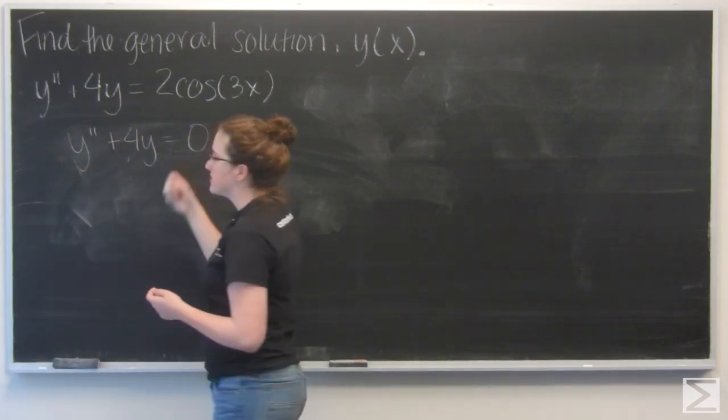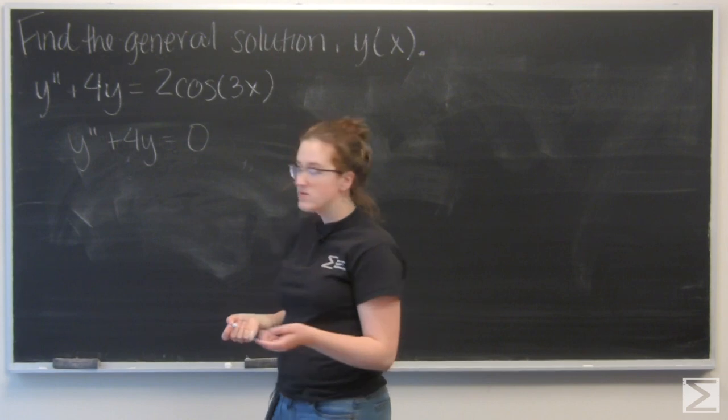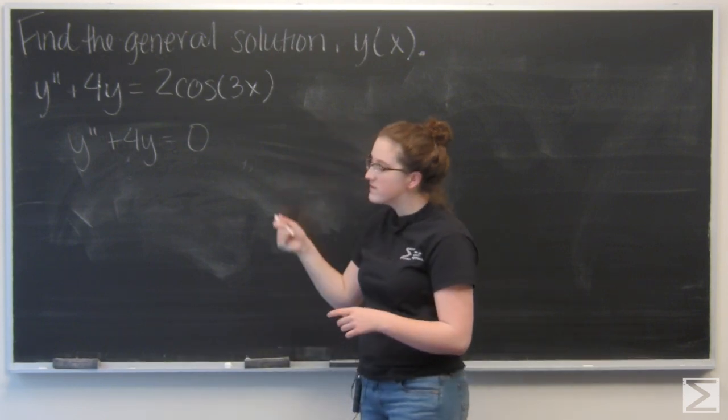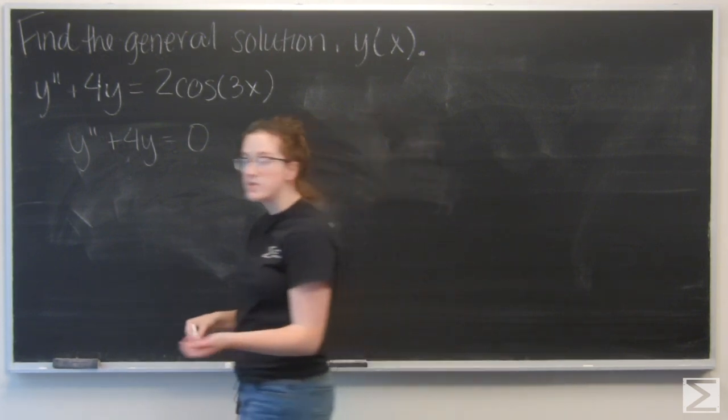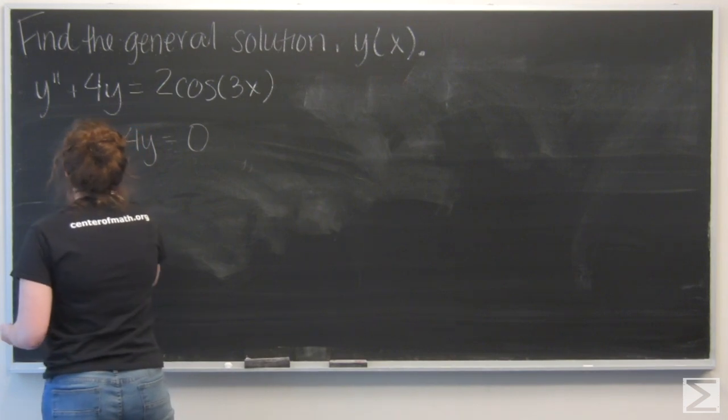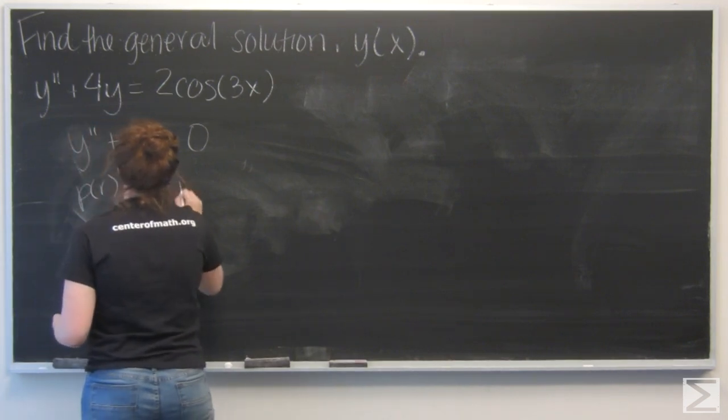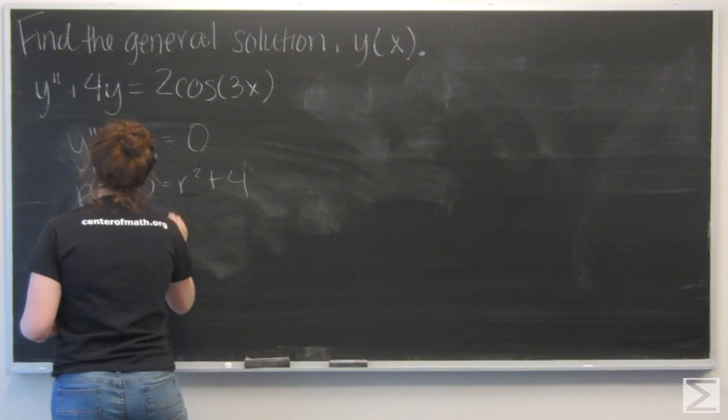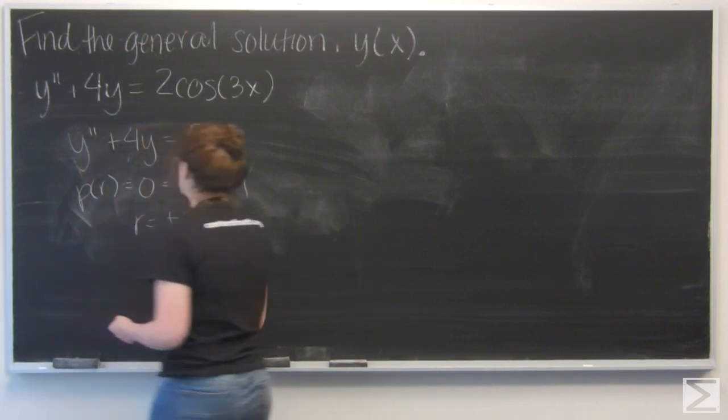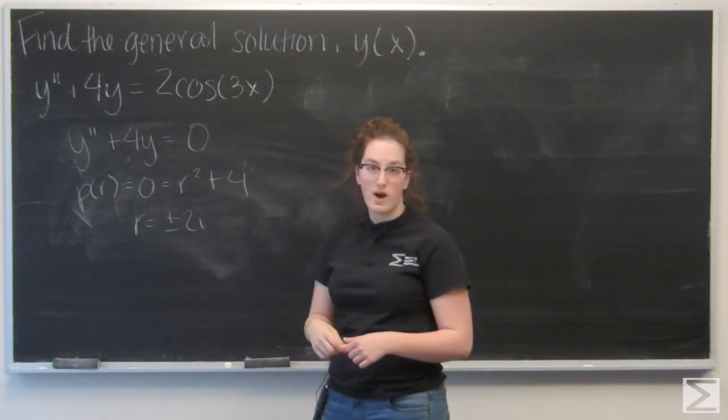And to find the general solution for that, I want to write the characteristic equation, which is going to be r squared plus 4, and I want to set that equal to 0 and find its roots. And those roots are going to be plus or minus 2i.